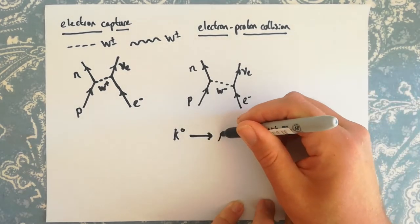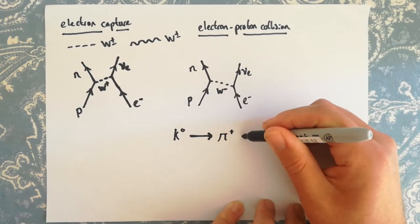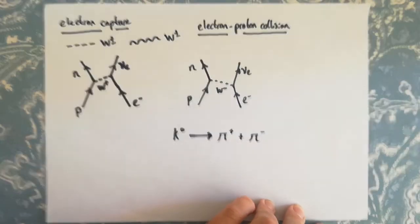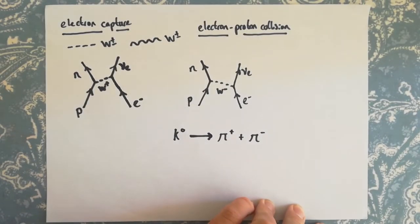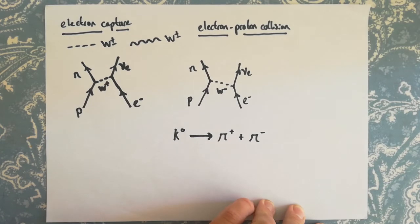So they have to decay by the weak force, which means they don't have to conserve strangeness. Now, kaons decay in lots of different ways. They can decay into muons, they can decay into pions, and the exact combination of pions is different depending on whether it's a K plus or K minus or K zero. In terms of the exam, you really just need to know that kaons decay into pions.